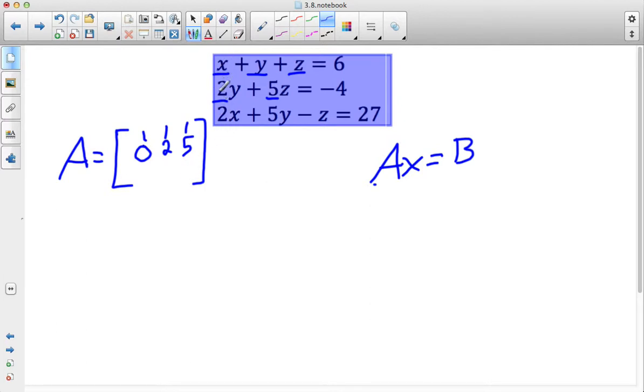And I end up with negative one as my coefficient here. Okay, that's A. X is going to be the matrix of variables, so I have X, Y, and Z, and I put these in a 3 by 1 matrix so I can actually multiply.